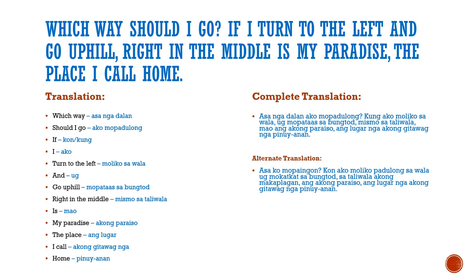Asa ko mupaingun is a shortened translation — it's a phrase you can use to ask anyone which way you're going, if you don't know directions.